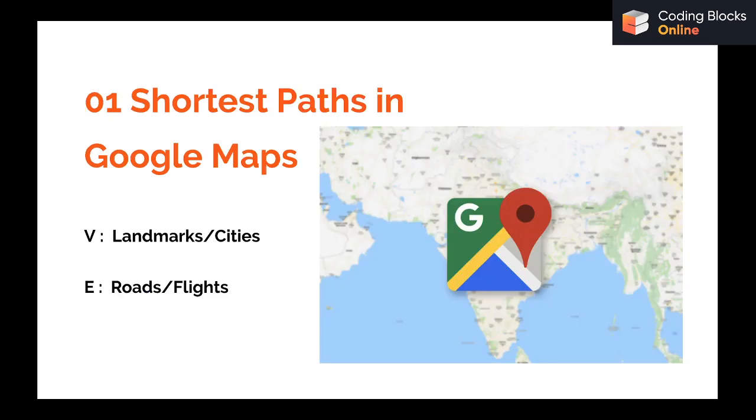The first application is very common, it's about Google Maps. If you think about the whole world as a network of landmarks or cities, you can represent each location by a vertex and there are edges that connect two cities or vertices. This makes the problem a graph problem.